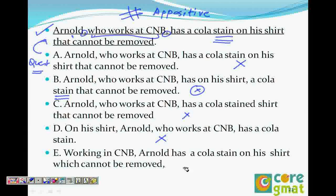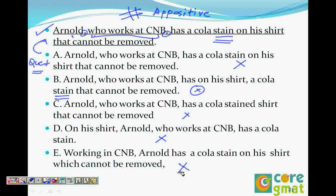Choice E says: 'Working at CNB, Arnold has a cola stain on his shirt which cannot be removed.' Here 'which' modifies 'shirt,' so shirt can be removed — this also goes away. So the answer is choice B: 'Arnold who works at CNB has on his shirt a cola stain that cannot be removed,' because the emphasis is on whether the cola stain can be removed or not. Saying 'shirt cannot be removed' is a wrong, illogical sentence.